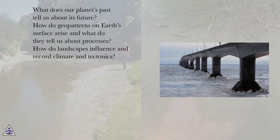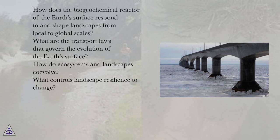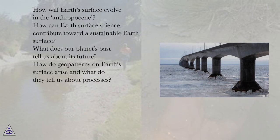The nine NRC research questions are: What does our planet's past tell us about its future? How do geopatterns on Earth's surface arise and what do they tell us about processes? How do landscapes influence and record climate and tectonics? How does the biogeochemical reactor of the Earth's surface respond to and shape landscapes from local to global scales? What are the transport laws that govern the evolution of the Earth's surface? How do ecosystems and landscapes co-evolve? What controls landscape resilience to change? How will Earth's surface evolve in the Anthropocene? How can Earth's surface science contribute toward a sustainable Earth's surface?